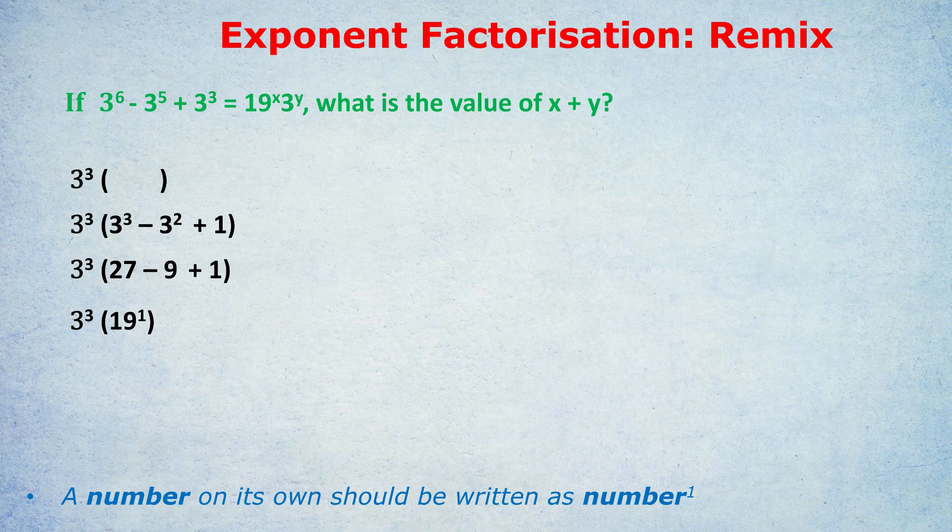Let's take this question. By comparing it to the right-hand side of the equation, 19 to the power of X times 3 to the power of Y, we can quickly see that X would have to be the 1 and Y would have to be 3. It's not quite as obvious what the X is if you don't write to the power of 1. And of course, if X is 1 and Y is 3, then X plus Y is 4.